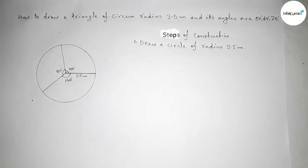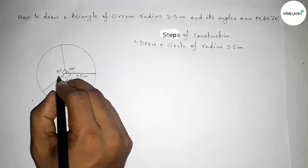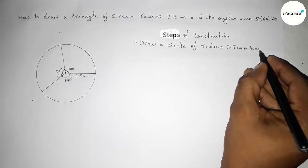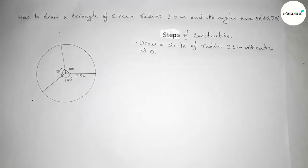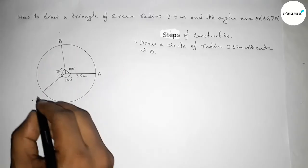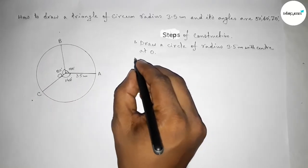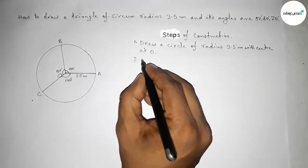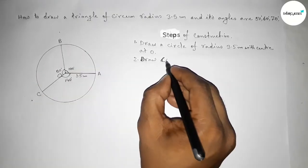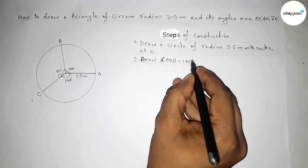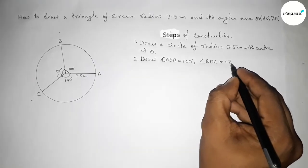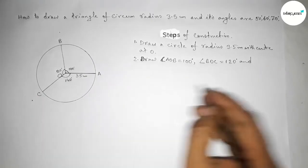Now we have drawn a circle of radius 3.5 centimeters with center at O. Taking point A, point B, and point C on the circle. Step number two: draw the angles — angle AOB equals 100 degrees, angle BOC equals 120 degrees, and angle AOC equals 140 degrees.